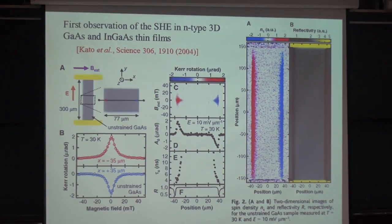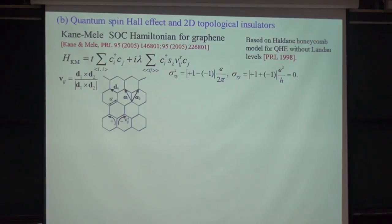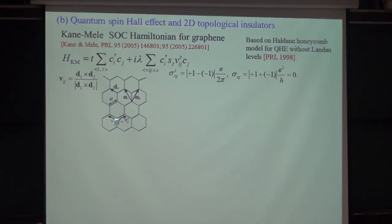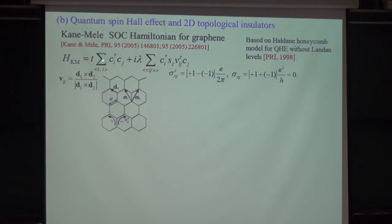Then some people asked: can we have a quantized version of the spin Hall effect? The field moved very fast. Kane and Mele immediately constructed a model based on graphene — at that time graphene hadn't yet been discovered by Geim and Novoselov. They proposed that in addition to the graphene tight-binding term, we add a spin-orbit coupling term, based on Haldane's earlier model of a quantized Hall effect without an applied field.